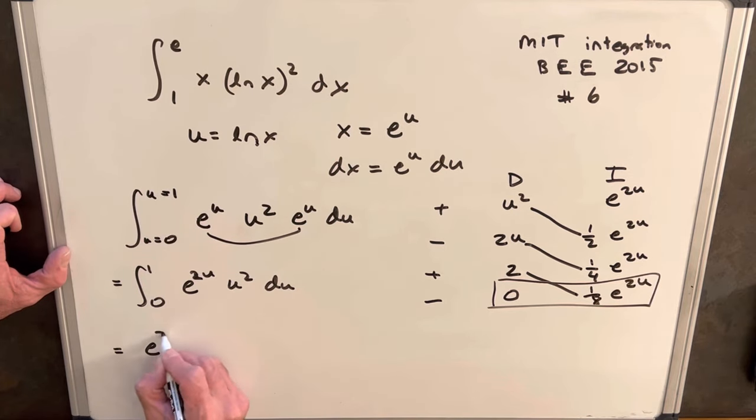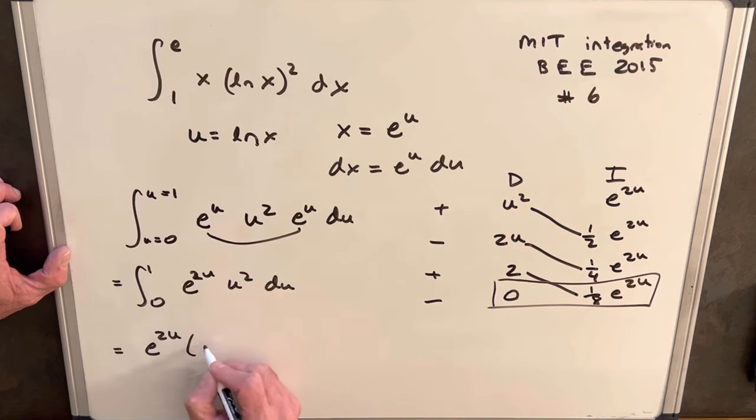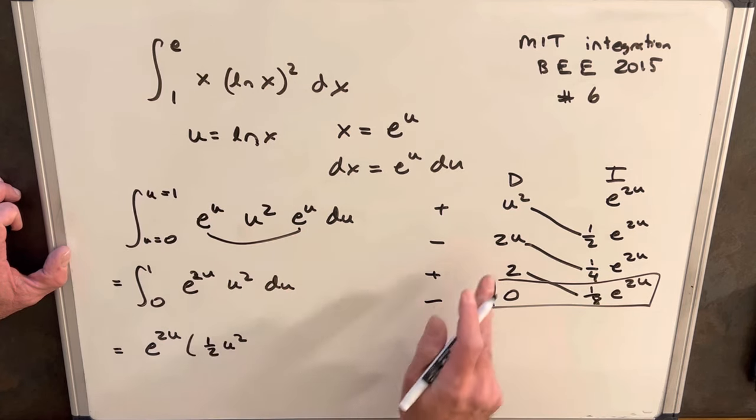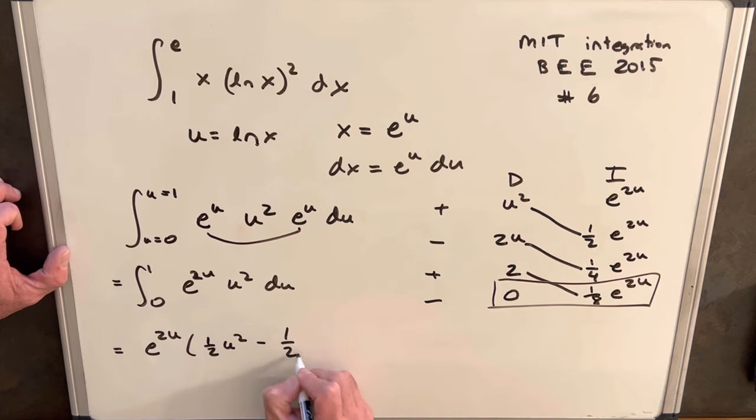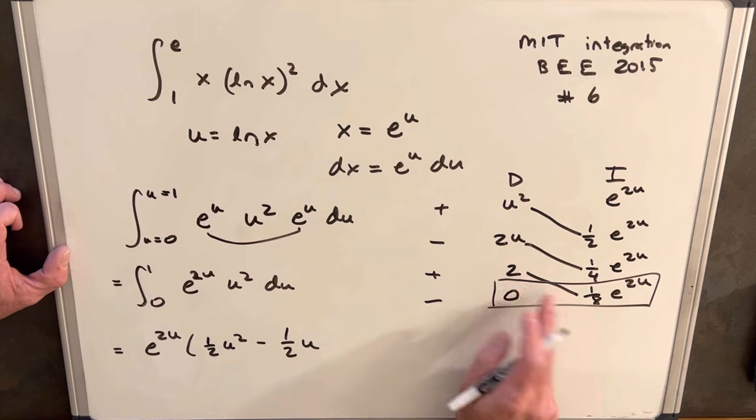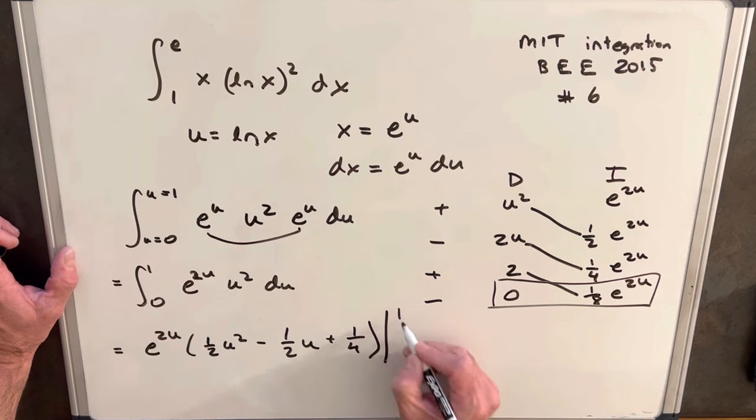So we'll have e to the 2u in each of these. And then we'll have a half u squared. Then here we'll have a half u with a minus sign, so we'll have minus a half u. And then this 2 times an eighth is a quarter, so plus a quarter. This is going to all be from 1 to 0.